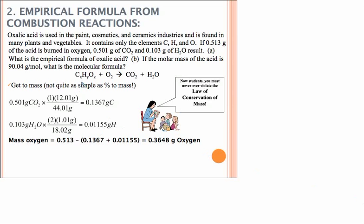So in this case, we have a substance that contains carbon, hydrogen, and oxygen. Now, when we do these, if it contains oxygen, because oxygen is found in two different places, you are going to have to start the problem with a get-to-mass step.